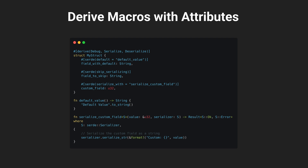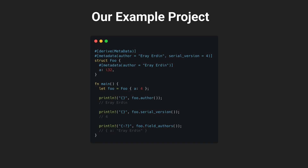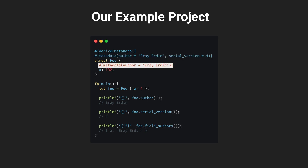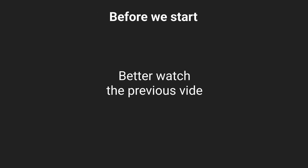So in this video, we're going to try to implement a derived macro with attributes. Our throwaway example for today is going to be a metadata library. We'll have a metadata trait with a derived macro, and we'll be able to define the author and version of the struct and each field individually. I have to emphasize that this video is a follow-up of the previous one — I will skip explaining some concepts about derived macros, so I highly recommend checking it before starting this video.